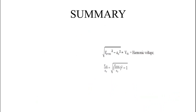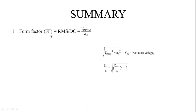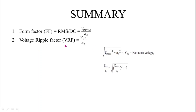Based on these two formulas, we derive other important expressions. Form factor equals the RMS value of output voltage divided by the DC component: FF = V₀rms / a₀. Voltage ripple factor (VRF) equals harmonic voltage divided by the DC component: VRF = Voh / a₀.